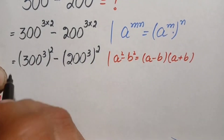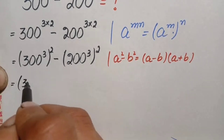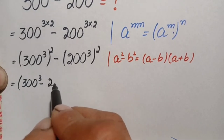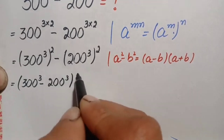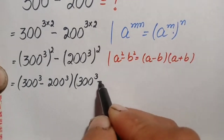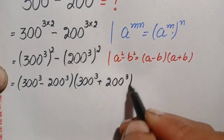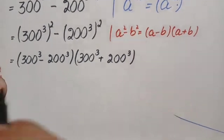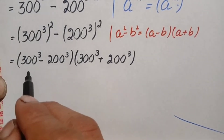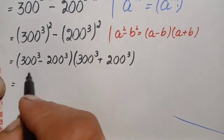Using the identity, the expression becomes (300³ - 200³)(300³ + 200³). We now need to find the values of 300³ and 200³.